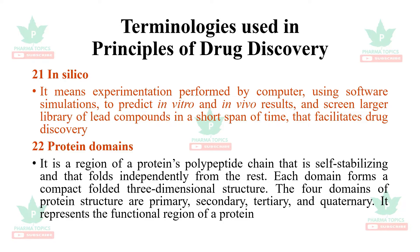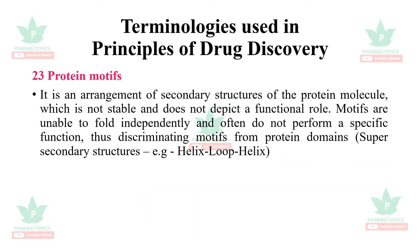Protein domains: a domain is a region of the protein's polypeptide chain that is self-stabilizing and folds independently from the rest. Each domain forms a compact, folded three-dimensional structure. There are four levels of protein structure: primary, secondary, tertiary, and quaternary — representing the functional region of a protein. Protein motifs are arrangements of secondary structures of a protein molecule which are not stable, unlike domains, and do not depict a functional role. Motifs are unable to fold independently and often do not perform a specific function — they are super-secondary structures, for example helix-loop-helix.